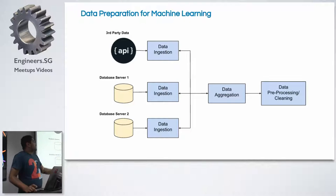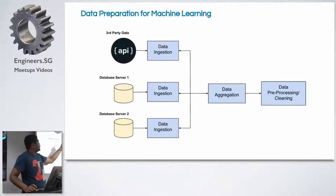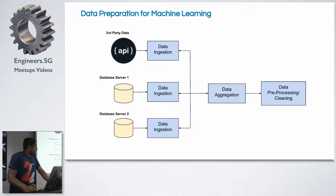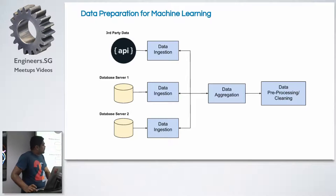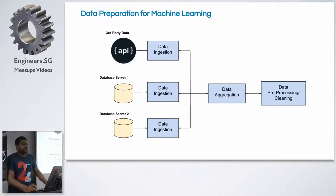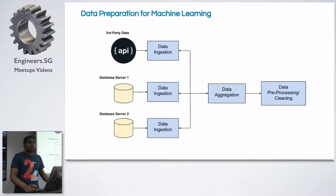A usual machine learning workflow requires consuming data — data ingestion from the API, from DB1, and DB2. The next step is aggregating the data, where we aggregate all the data on the basis of some common field or many other fields. After that, we go into the state of cleaning the data so it's ready for training the machine learning model.